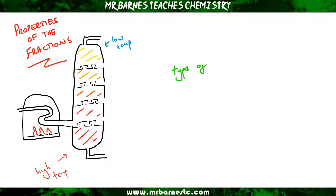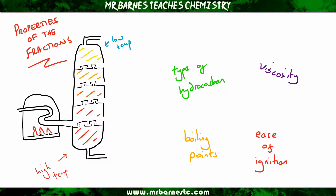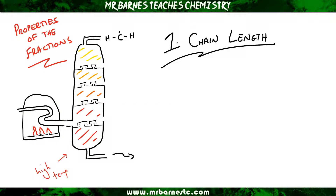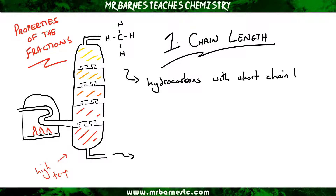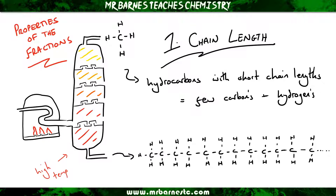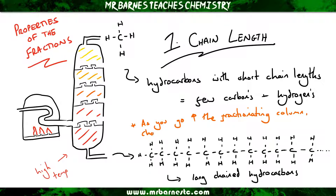What you also need to know is what happens to the type of hydrocarbon, the viscosity, the boiling point and the ease of ignition as we go from the top of the column to the bottom. Starting with chain length, which is effectively the size of the molecule: at the top of the column the hydrocarbons have short chain lengths with few carbon and hydrogen atoms. At the bottom we have long-chained hydrocarbons with many carbon and hydrogen atoms. Therefore, as you go up the fractionating column, the chain length decreases.